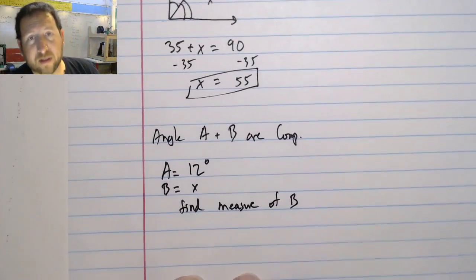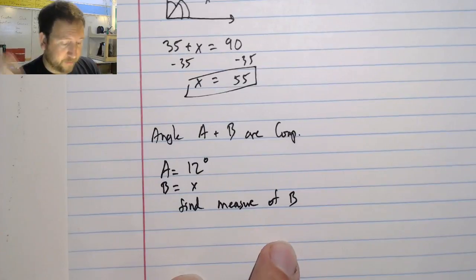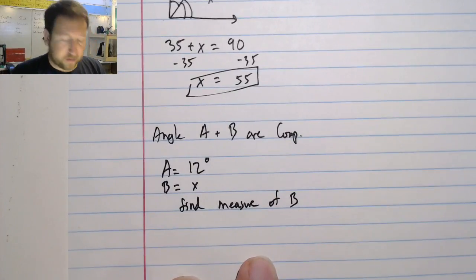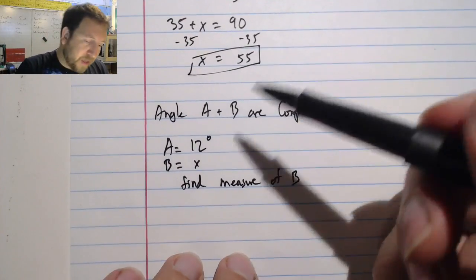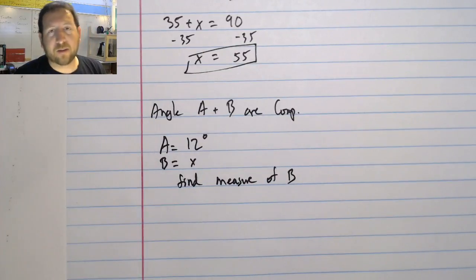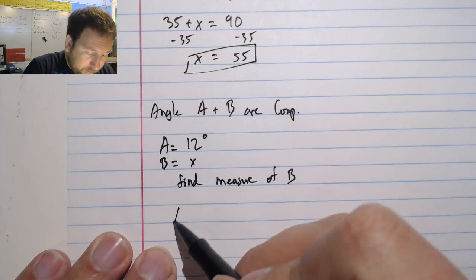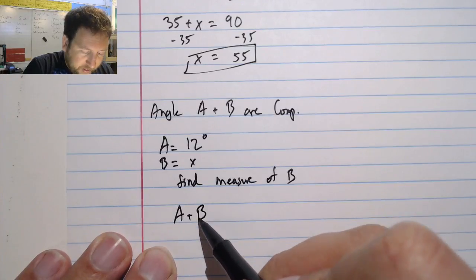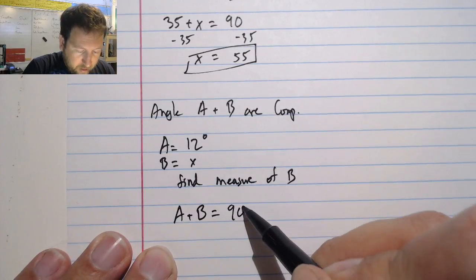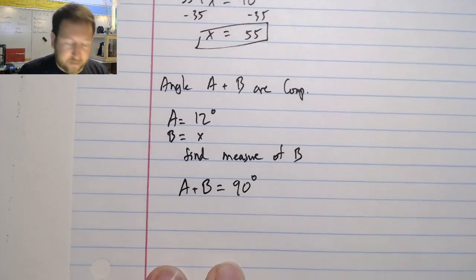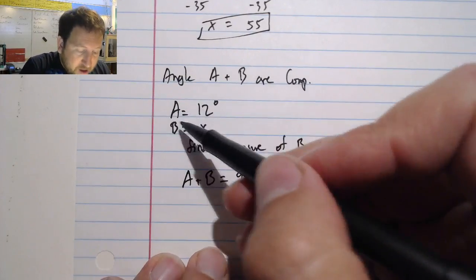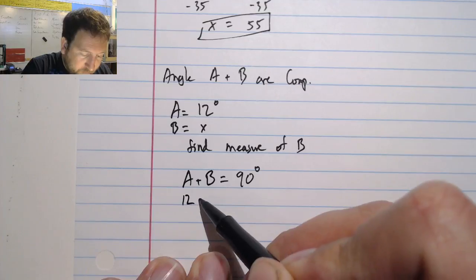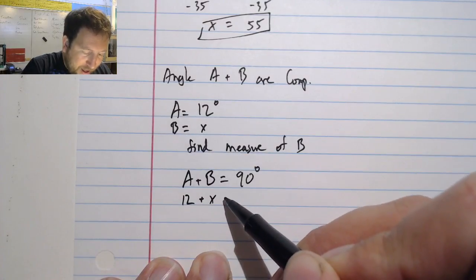Now, I could draw this out if I wanted to, but it's not going to help me at all. All the information that I need to do this is already given to me. So I don't have to measure it out and get a protractor and then figure it out. I can just say that A plus B equals 90 degrees, because I know them to be complementary. And in fact, I even know that A is 12 and B is x.